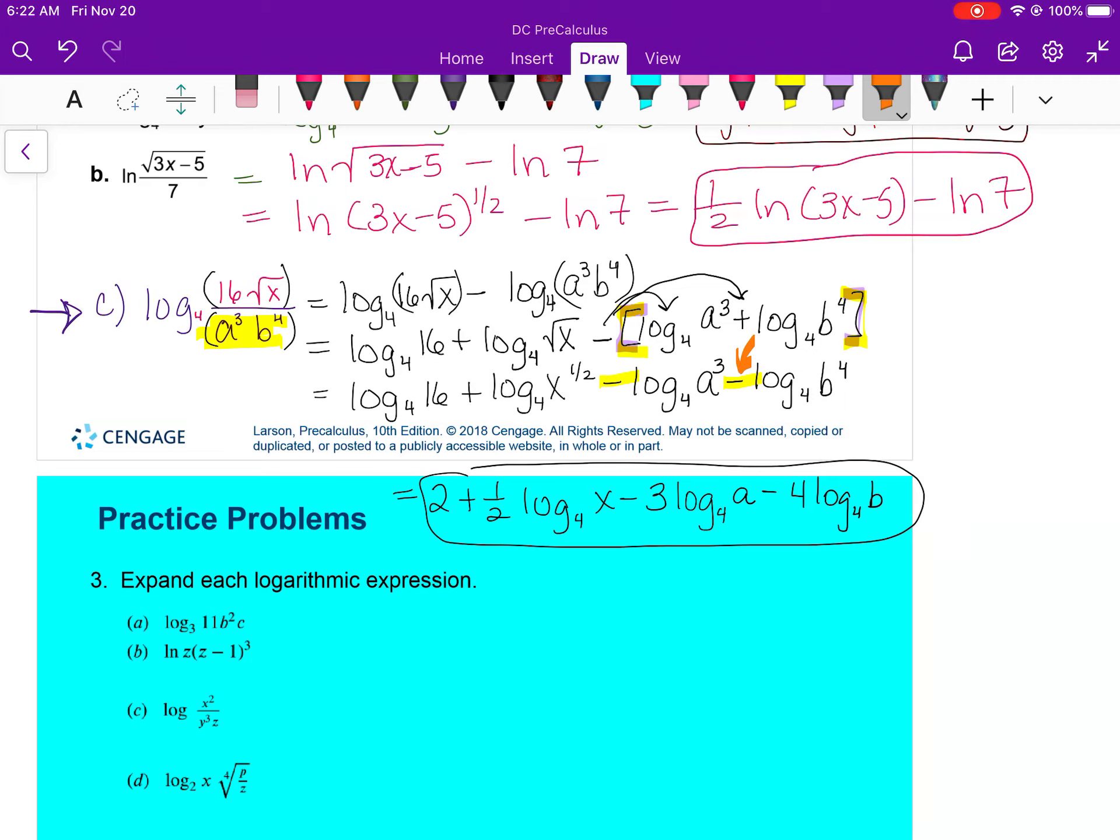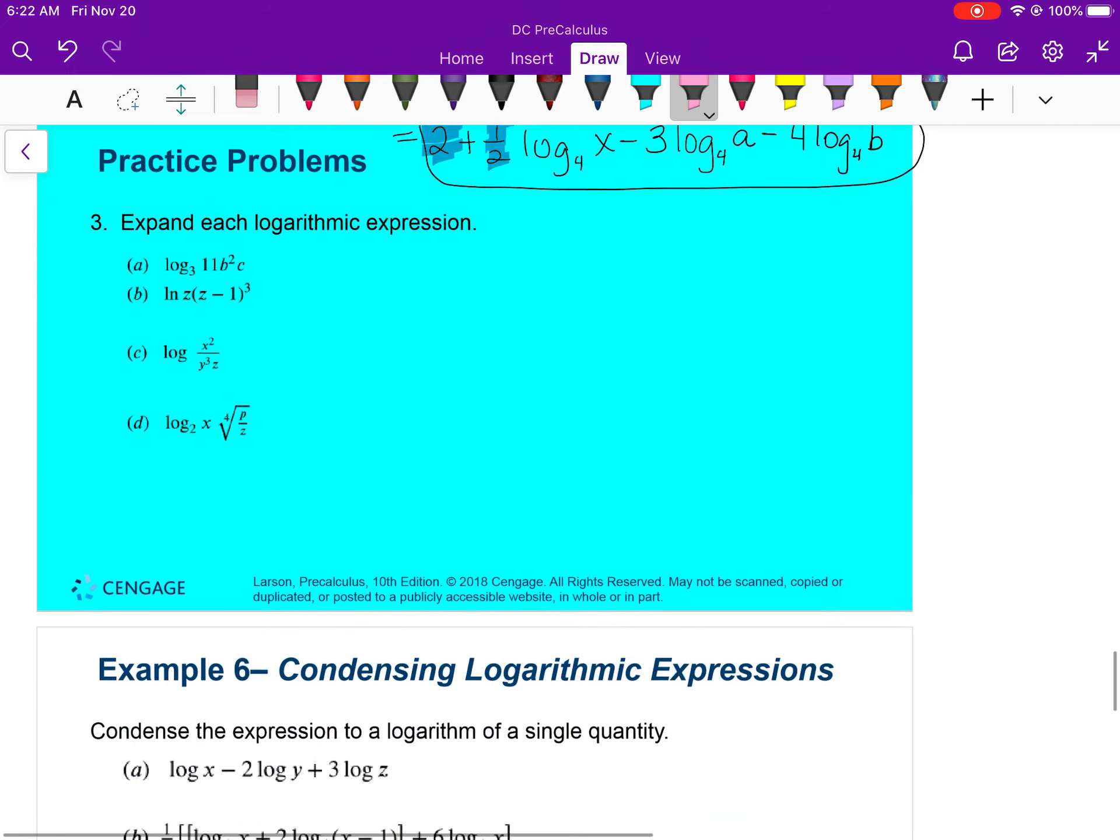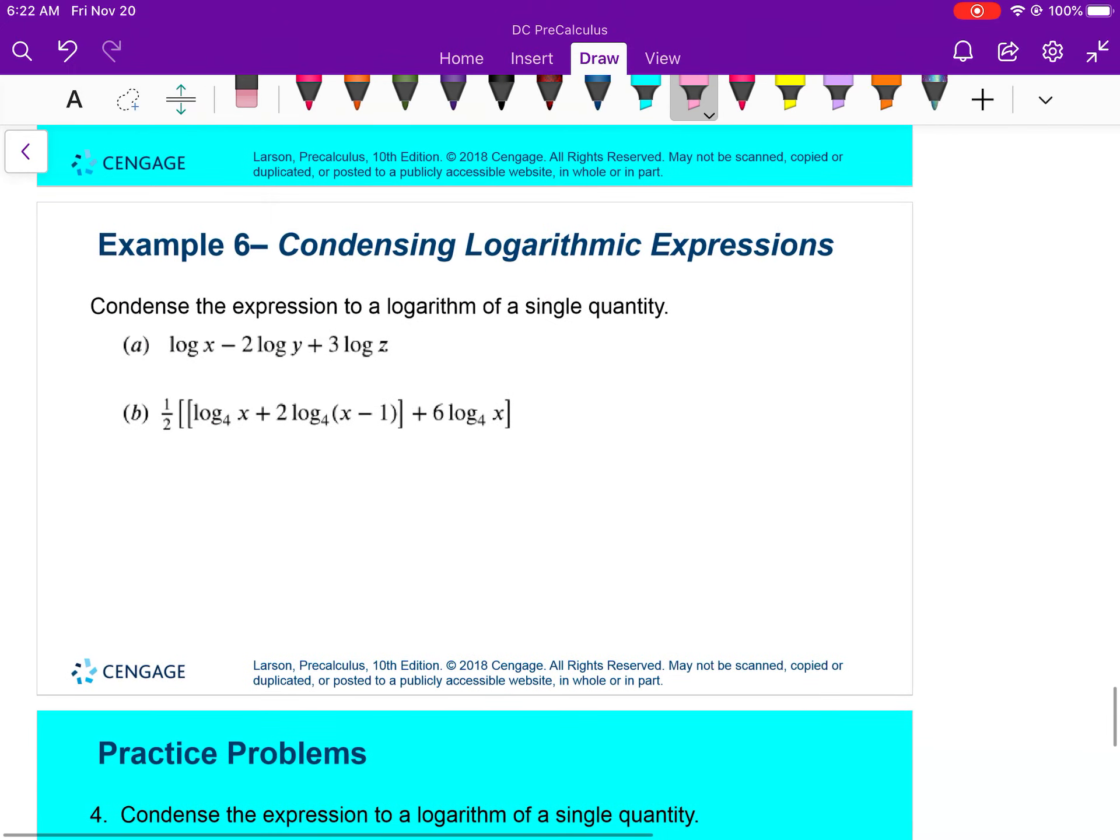The last step was to put the exponents back down to the front, and we also had to figure out that log base four of 16 was two. And I should backtrack just a little bit: the square root was an x to the one half, and that one half is right there. So all the exponents came to the front and we got it.